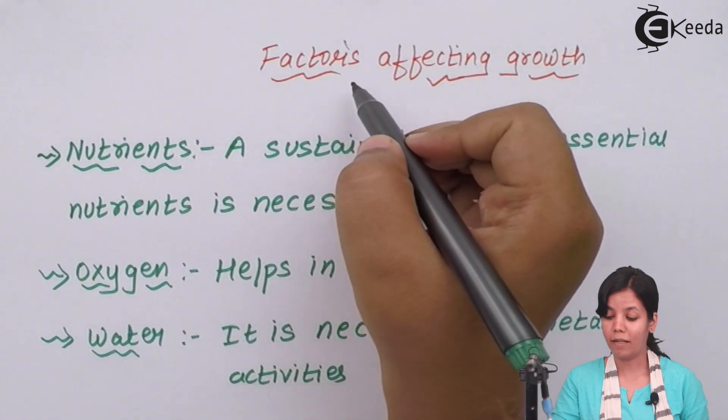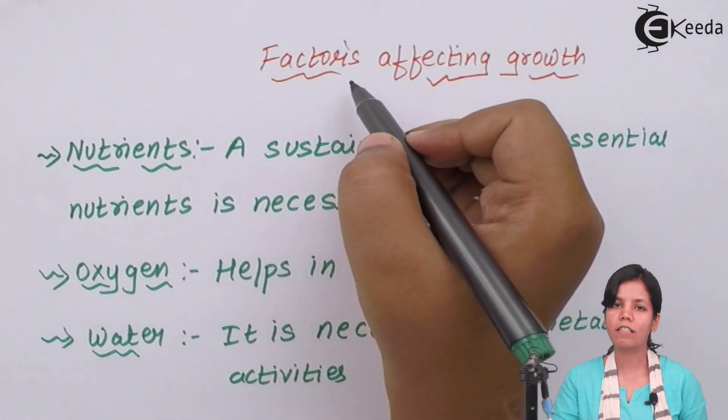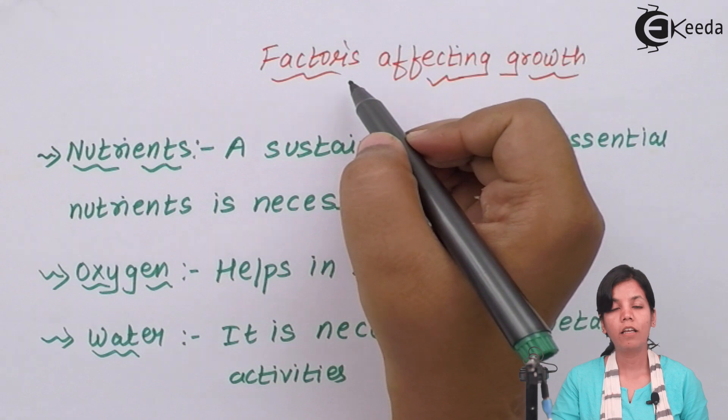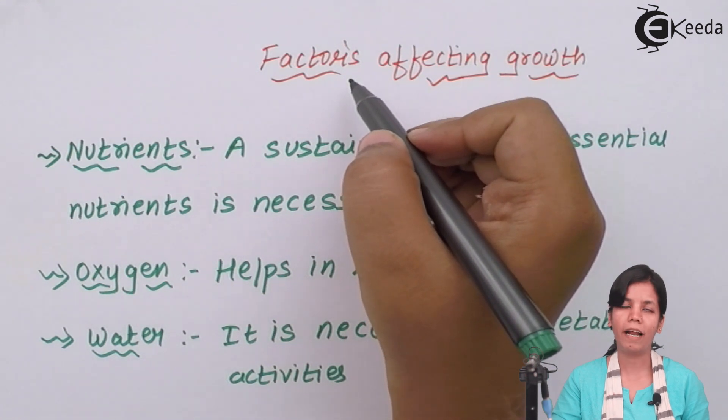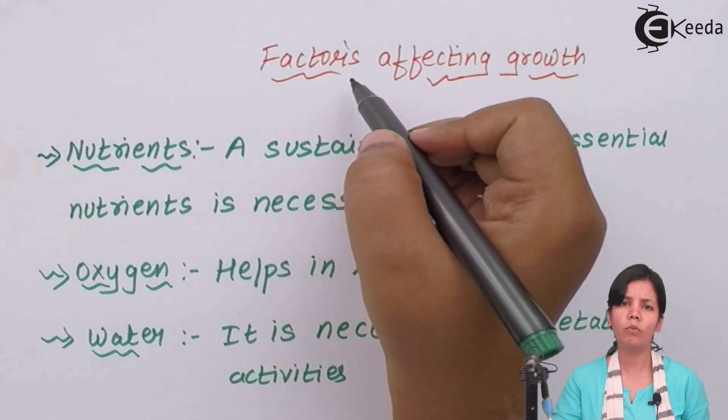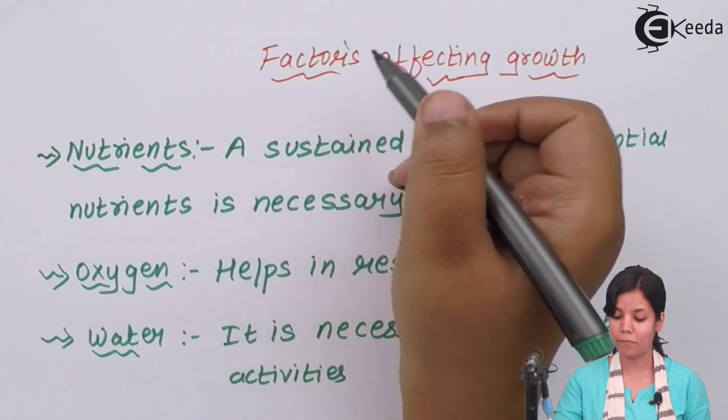Factors affecting plant growth. These factors are important to plant growth and if any one of them misses, the plant will not grow or the plant growth will be ceased. And these factors are nutrients.